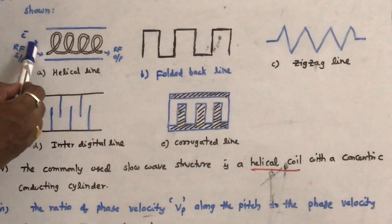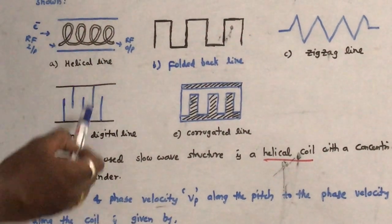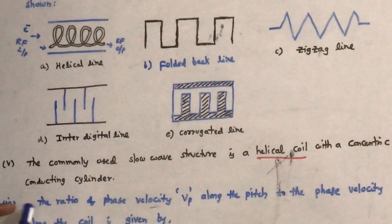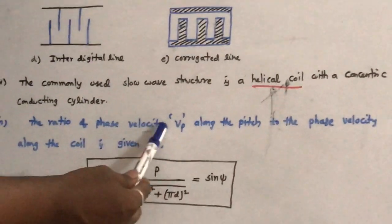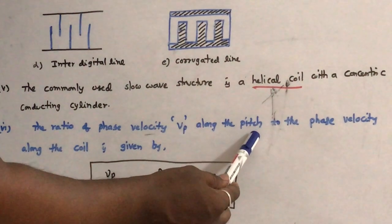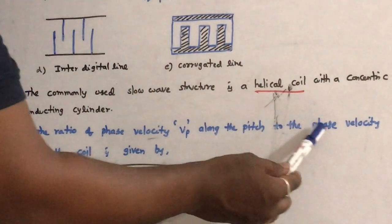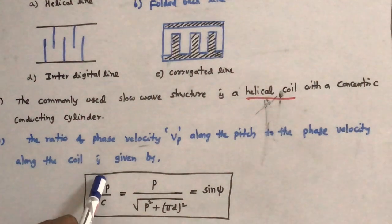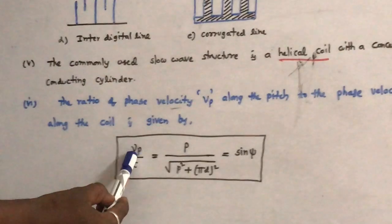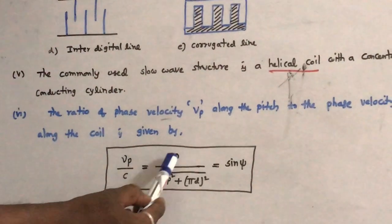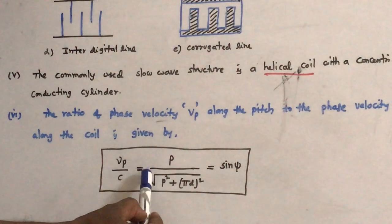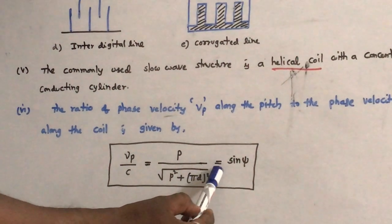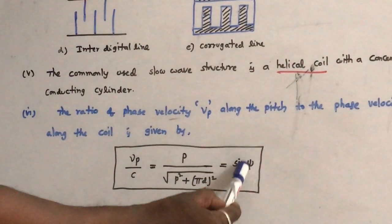The ratio of the phase velocity along the pitch to the phase velocity along the coil is given by: Vp/c = p / √(p² + πd²) = sin ψ, where p is the pitch of the helix, d is the diameter, and ψ is the pitch angle.